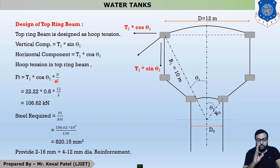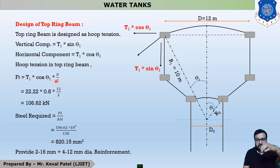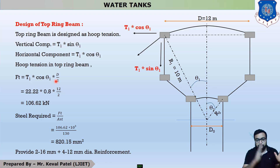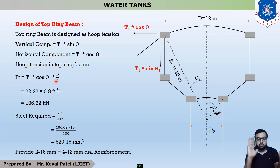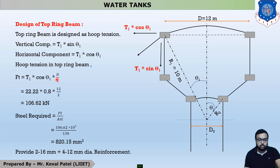The diameter is 12 meters, so the CG distance is 6 meters — half the load comes to each beam. This principle applies to all circular ring beams. We design a 1-meter component of the top ring beam using the dimension D/2.